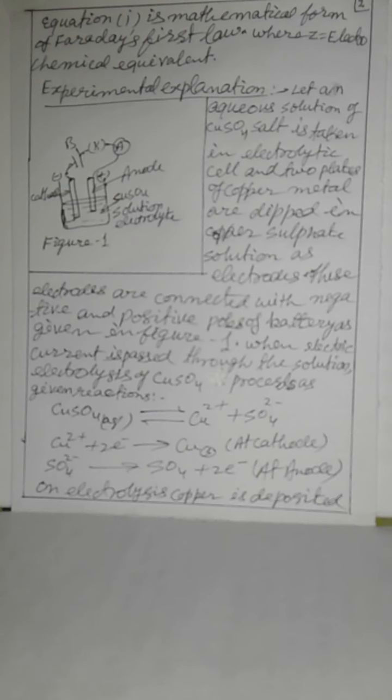Experiment and explanation: An aqueous solution of copper sulfate salt is taken in an electrolytic cell and two plates of copper metal are dipped in the copper sulfate solution as electrodes. These electrodes are connected with the negative and positive poles of a battery as given in Figure 1. When electric current is passed through the solution, electrolysis of copper sulfate proceeds.